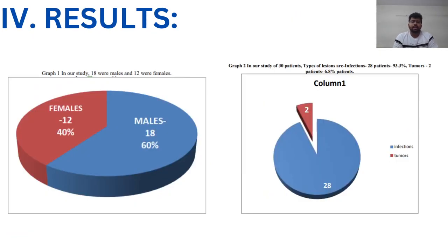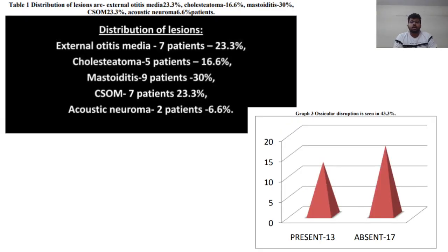In our study, 18 were male and 12 were female. Out of 30 patients, 28 had infections and only 2 showed acoustic neuroma. Regarding distribution of lesions, 7 patients showed features of external otitis media, 5 showed cholesteatoma, 9 showed mastoiditis, 7 showed features of CSOM, and 2 showed acoustic neuroma.